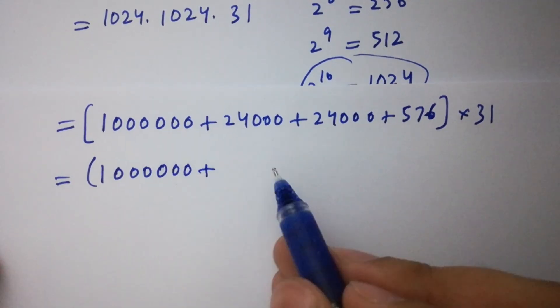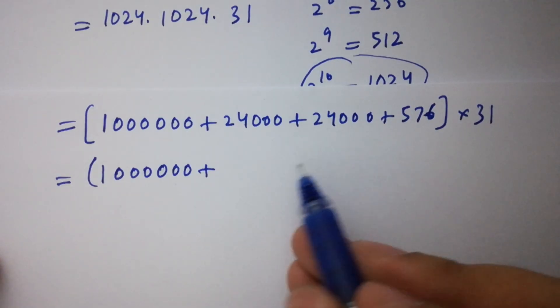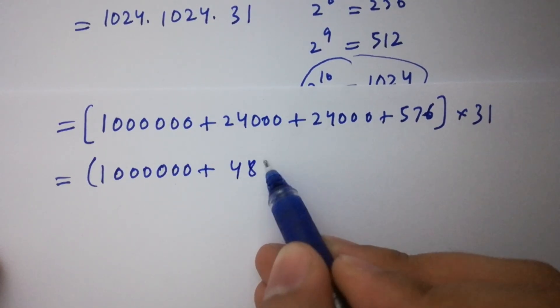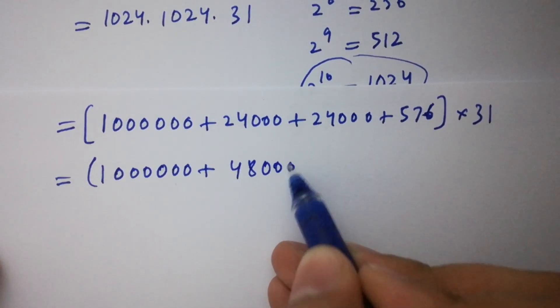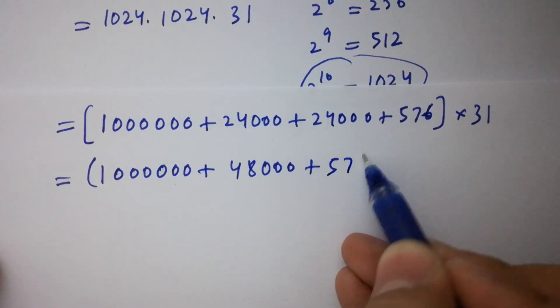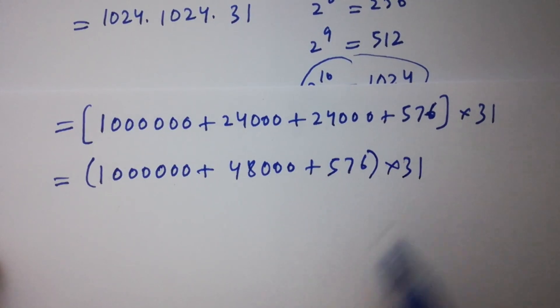Adding those together: 24,000 plus 24,000 gives 48,000, plus 576, giving us 1,048,576. Now multiply this by 31.